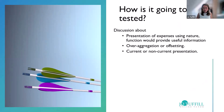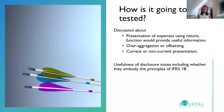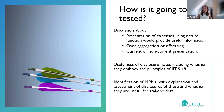In Section B, IFRS 18 may be tested through discussion of presenting expenses by nature or function and which provides more useful information; discussion of over-aggregation or offsetting and what is permitted; classification of items as current or non-current; discussion of the usefulness of disclosure notes and whether they embody IFRS 18 principles, including critiquing a given disclosure note; and identification of management-defined performance measures with assessment of how they've been disclosed and their usefulness to stakeholders.